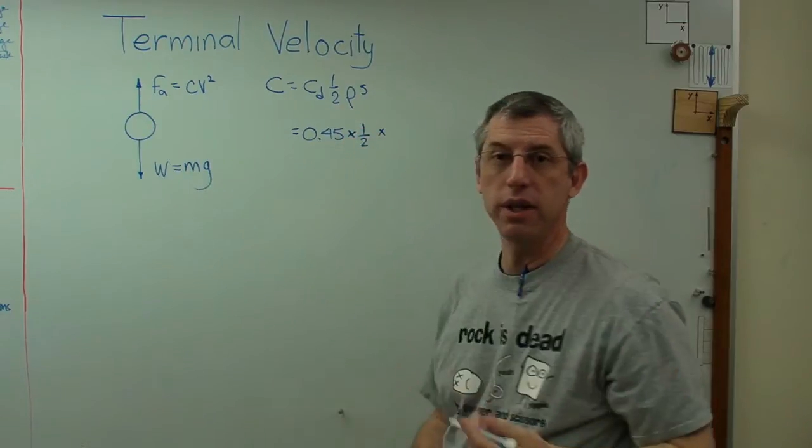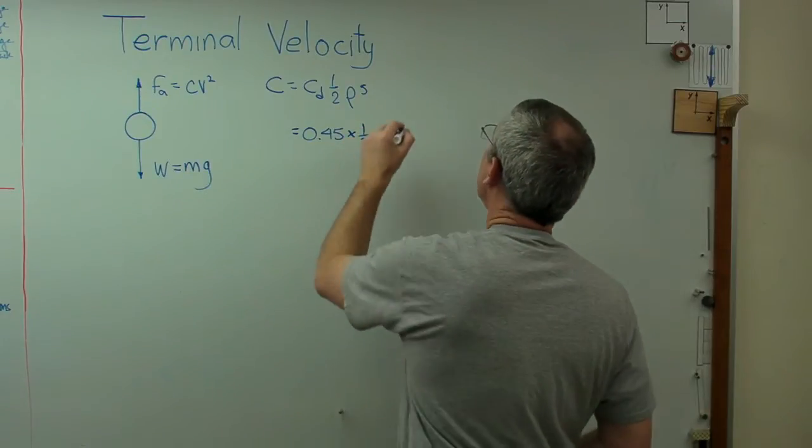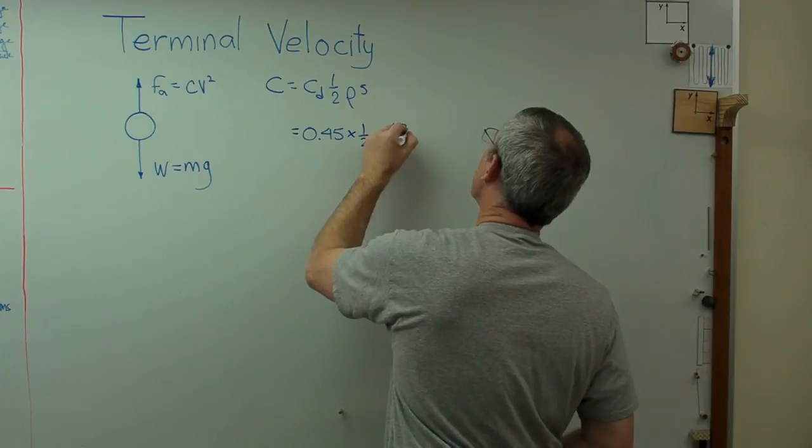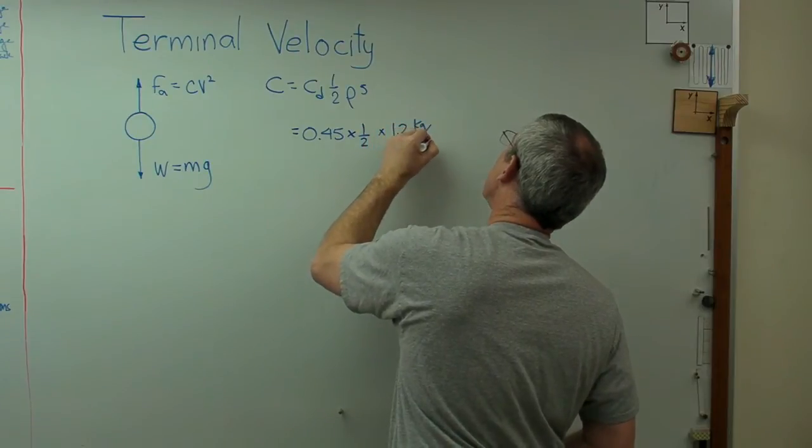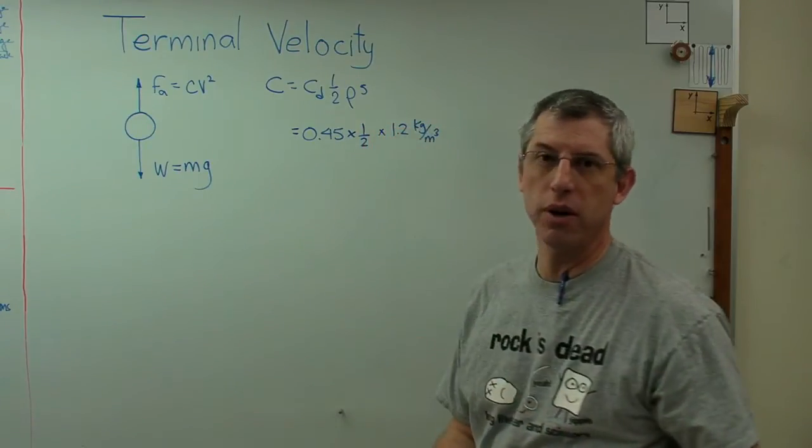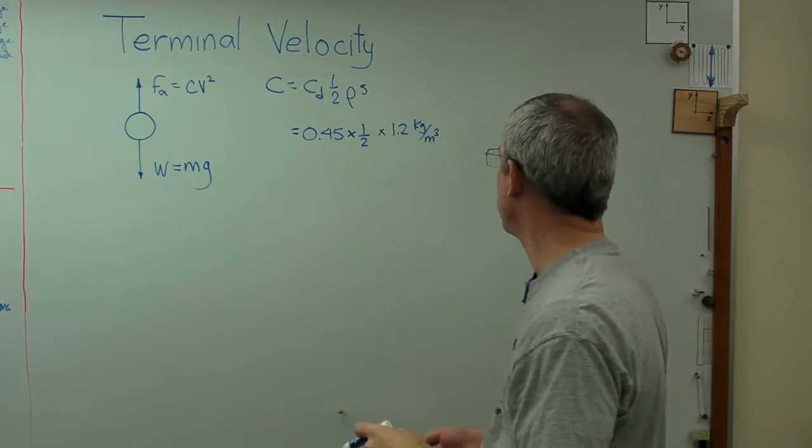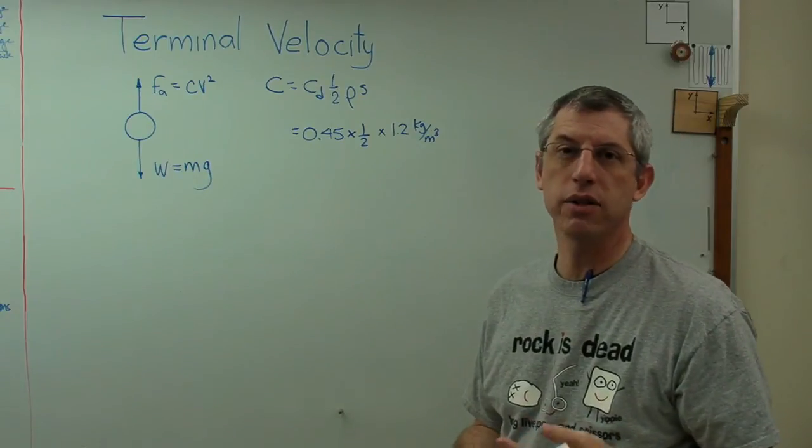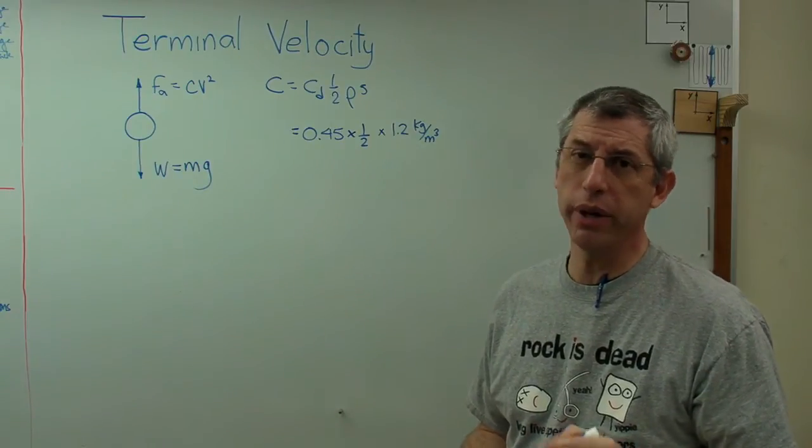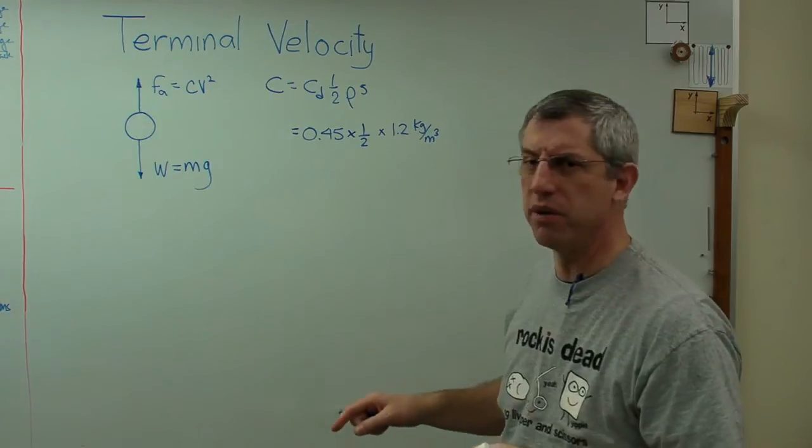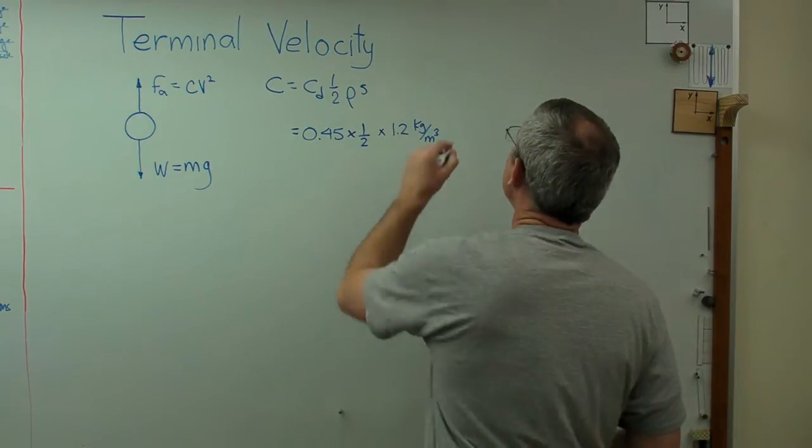Rho is the density of air. Now we're working in metric units here. The density of air is approximately 1.2 kilograms per cubic meter. Now it depends on where you are, what altitude, and a lot of other things. Standard day at sea level, it's 1.23. Well, I'm a little above sea level right now, so 1.25 sounds good.